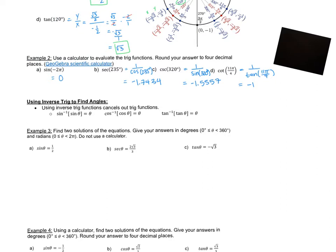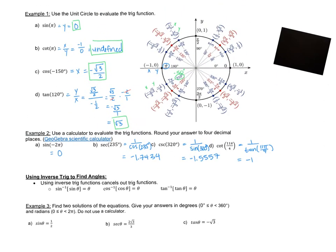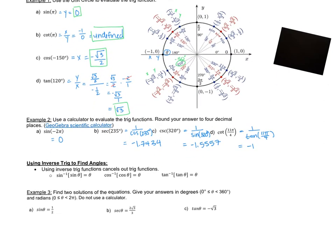The reason we sometimes use a calculator and sometimes use a unit circle is because the unit circle doesn't always have the angle you're given. For instance, secant at 235 degrees — if you look at the unit circle, there is no 235 there; it would be between 225 and 240. So it's easier to use the calculator when the unit circle doesn't have that value.